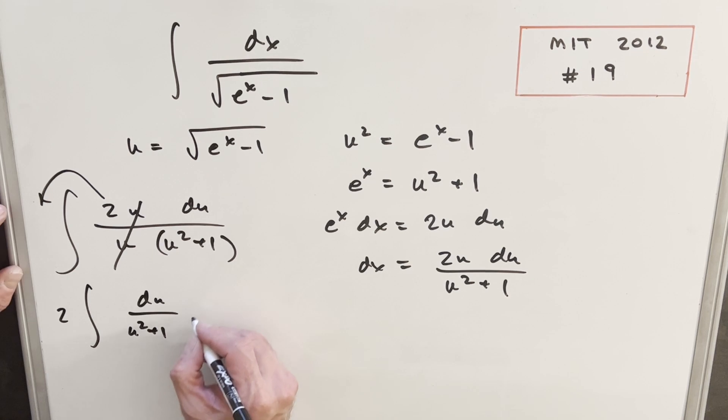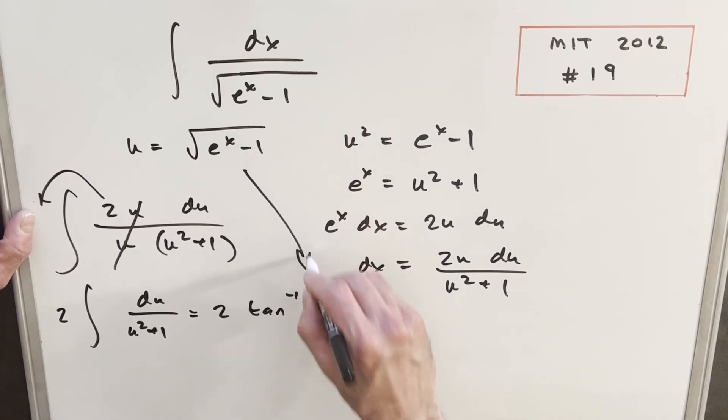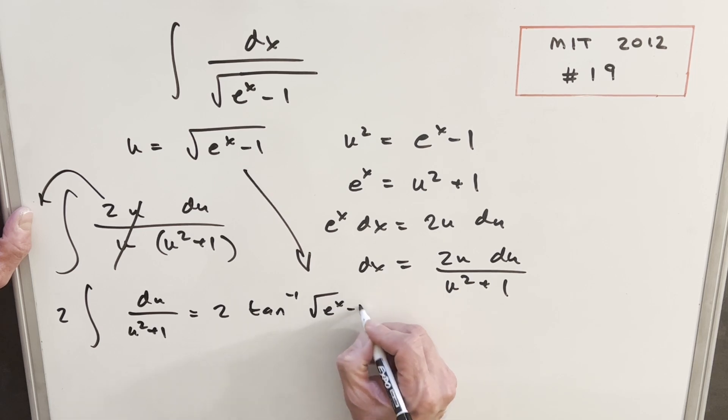But this integral right here is just actually arctan. So we're going to have 2 arctan or inverse tan of u. But we know the value of u, so I'm just going to bring it in here right away. So we're going to have, for u, we're going to have the square root of e to the x minus 1 plus c.